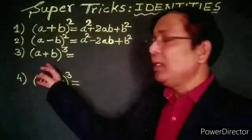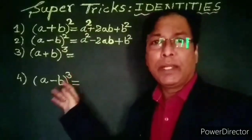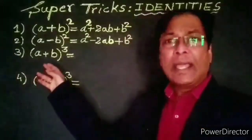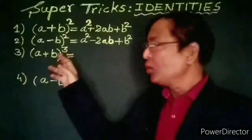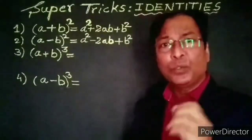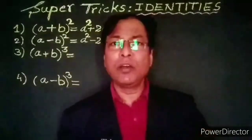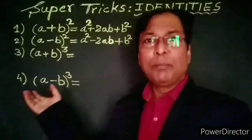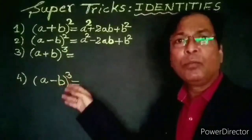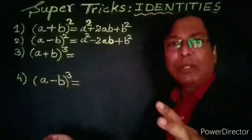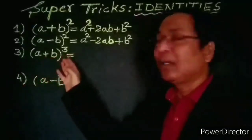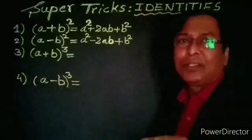The identities (a+b)³ and (a-b)³ play a very important role in solving many numericals. I will give you such a technique — a super trick — so that you need not memorize or spend much time remembering these. Whenever you require the expansion of (a+b)³ or (a-b)³, you can easily derive it on the spot. No need to waste your time memorizing these higher identities. Here we go.